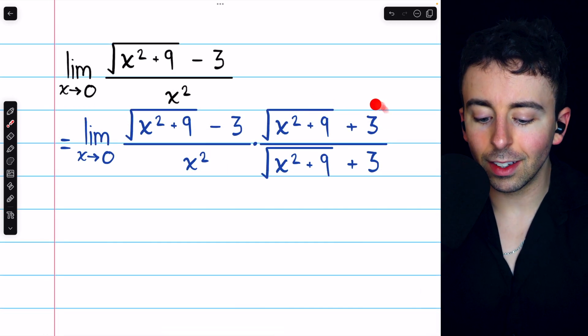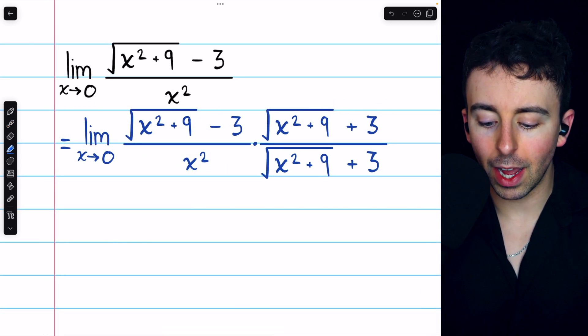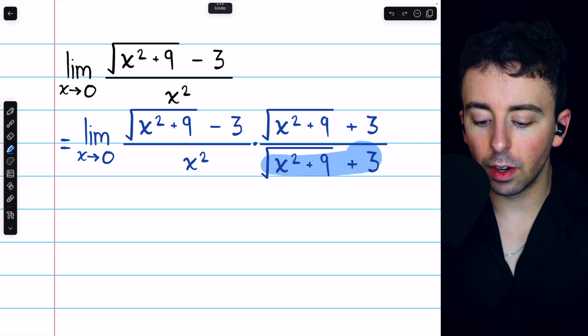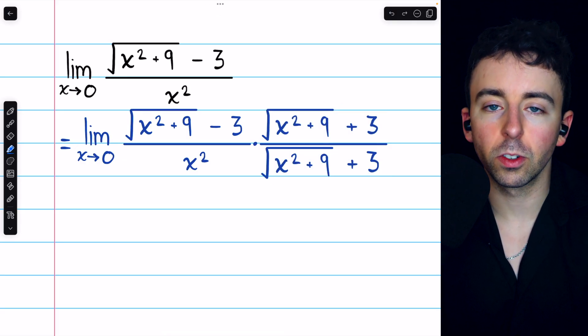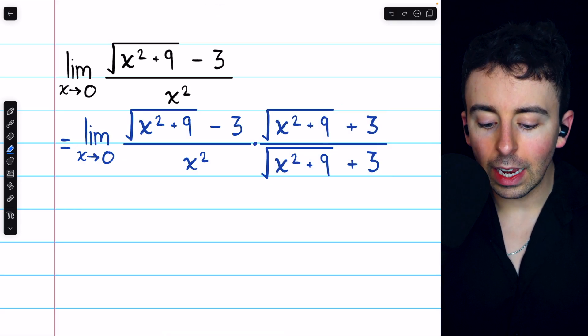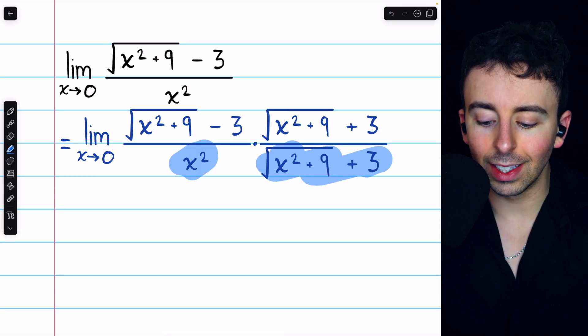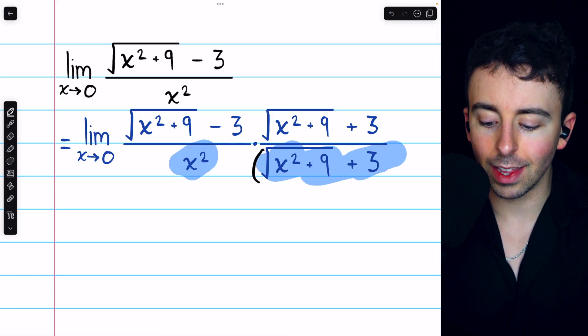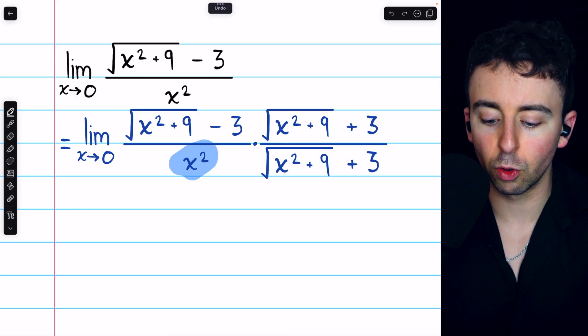So this is what that looks like. We're going to multiply this expression by the conjugate, and we have to divide by the conjugate too. That way, we're just multiplying by 1. Now, in the numerator, we're just going to leave this as it is: x squared multiplied by this conjugate. We're not going to bother distributing.